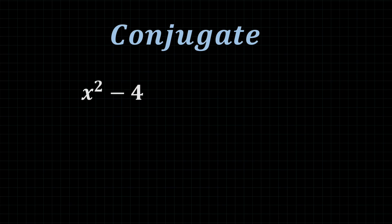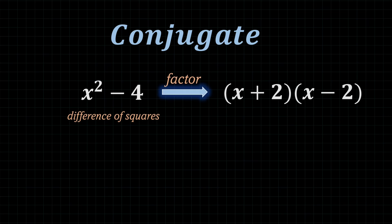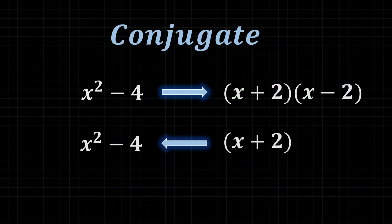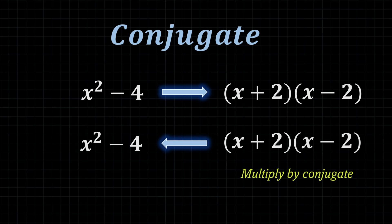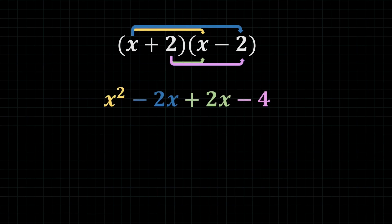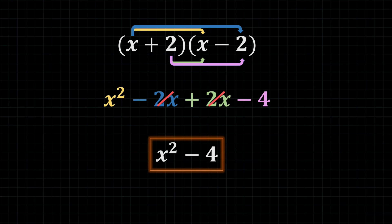Let's look at what a difference of squares is. We can factor it and it turns into two brackets — these two brackets are known as conjugates. Conjugates have identical terms but opposite signs. What if I have (x plus 2) and want to turn it back into x squared minus 4? I would have to multiply it by its conjugate, and we can prove it here. When we multiply these two brackets we FOIL, and the middle terms cancel out, giving us x squared minus 4, which is what we expected.